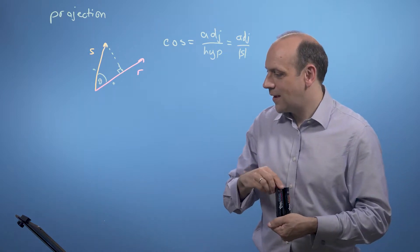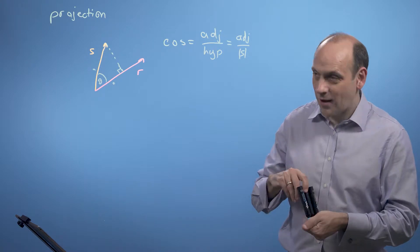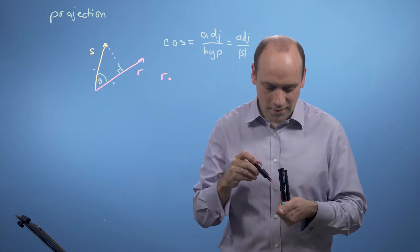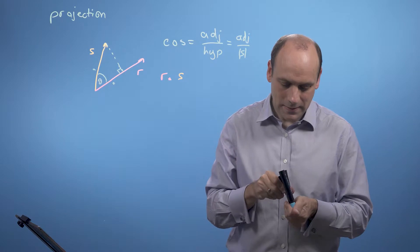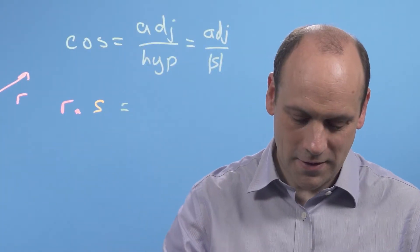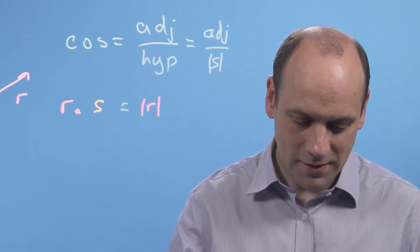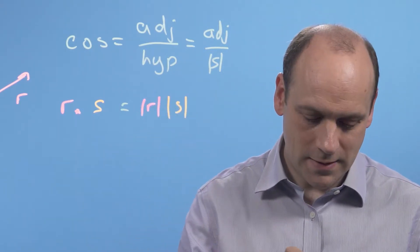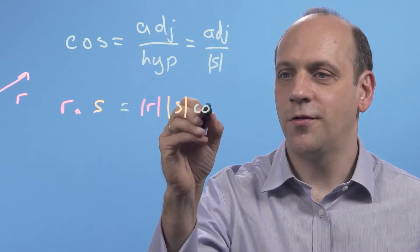Now, if I compare that to the definition of the dot product, I can say that r dotted with s is equal to mod r, size of r, times the size of s times cos theta.